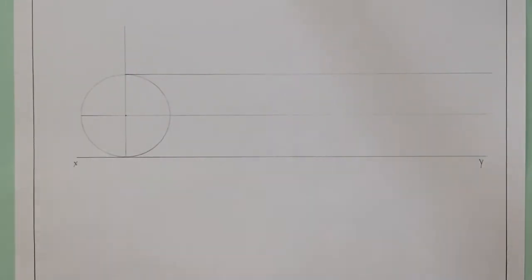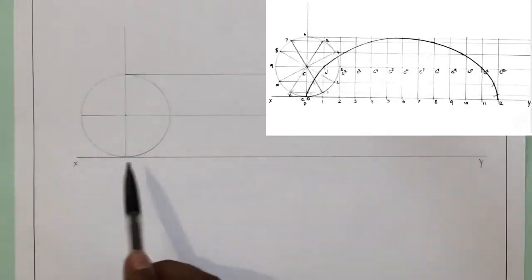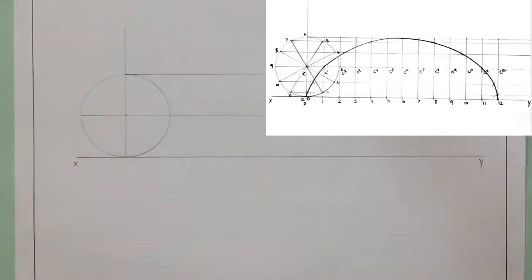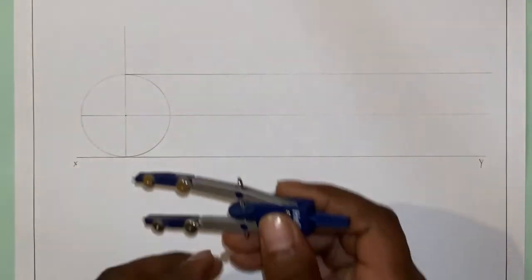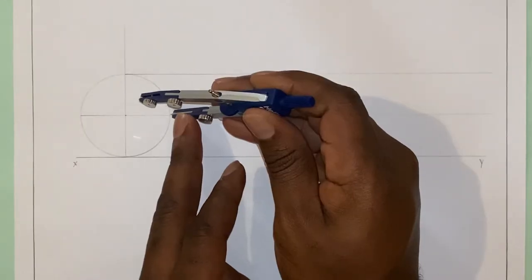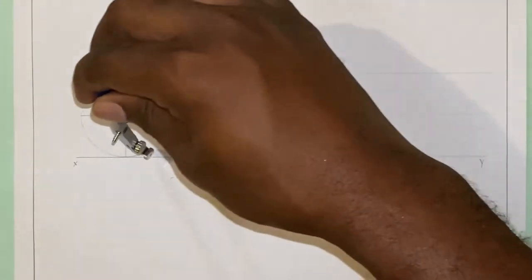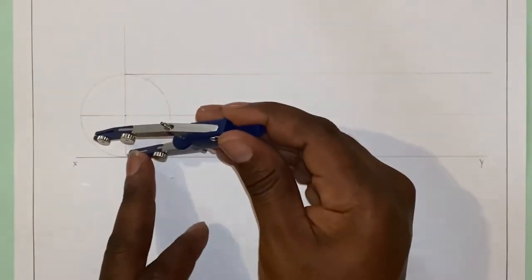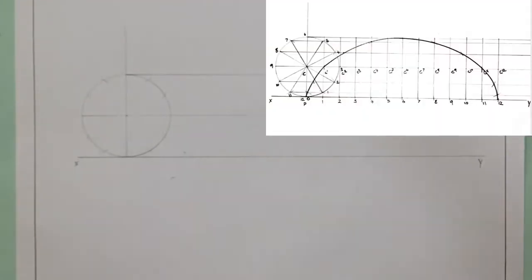The next step is we are going to divide our circle into 12 equal parts. I'm also going to be dividing the line XY into 12 equal parts to represent the circumference of the circle. Remember, when dividing a circle into 12 equal parts, we set our compass to the radius of the circle, then place the compass at each quadrant point and scribe arcs to each side. Now I'm going to label these parts and divide our circle into these 12 equal parts.